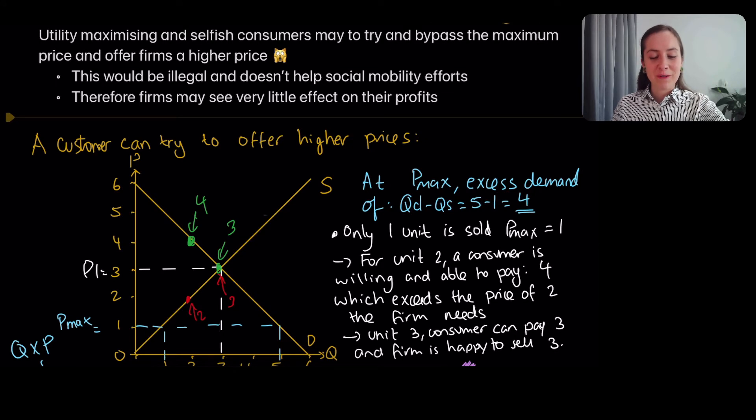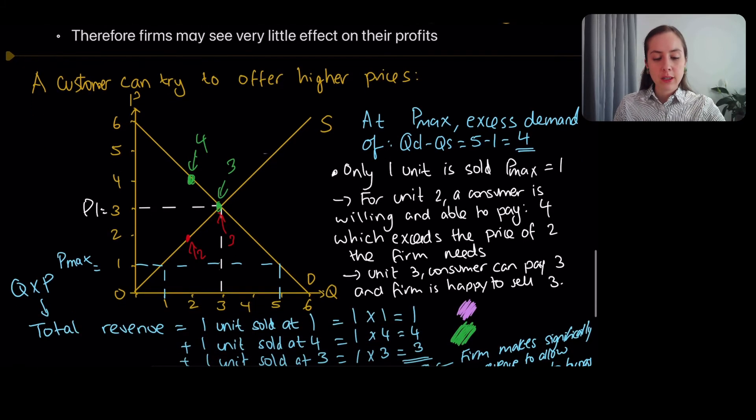Another problem of a maximum price is the possibility of corruption. So we've talked about how if a maximum price is imposed at price one, there's going to be loads of demand. It's that much amount. There's five demand. And we've talked about how only one unit will be sold.